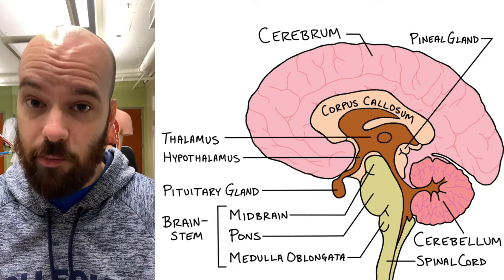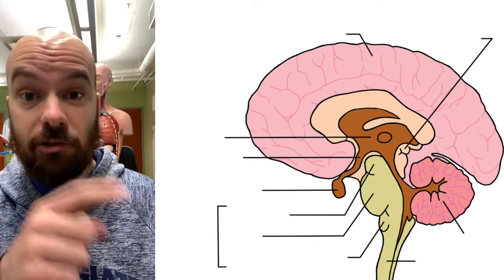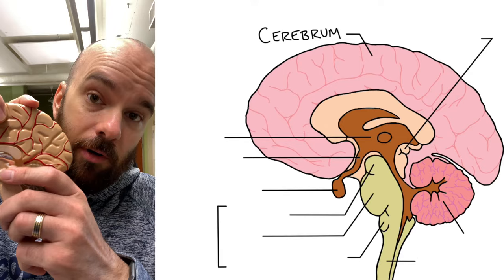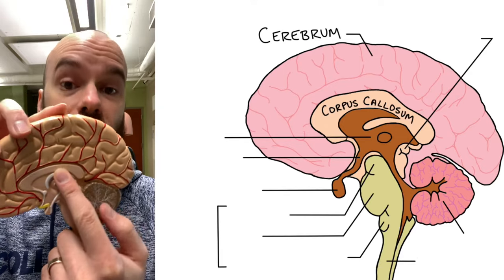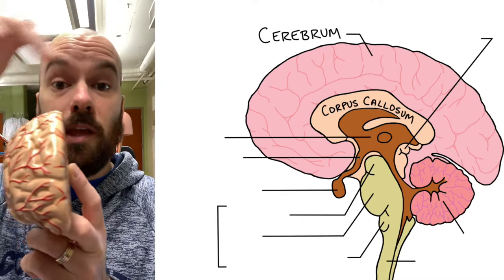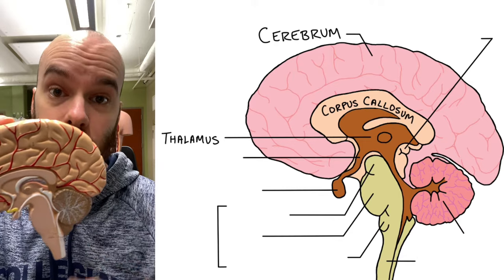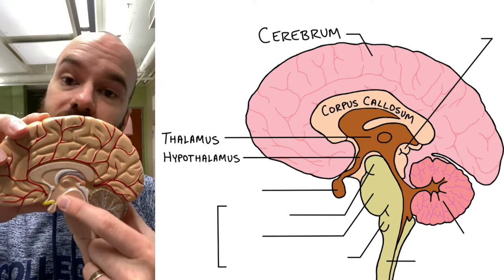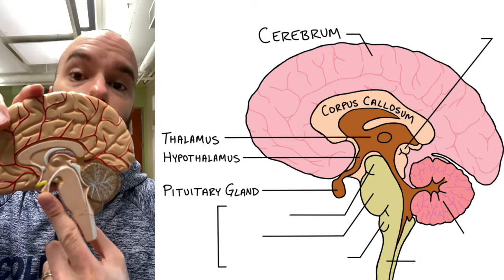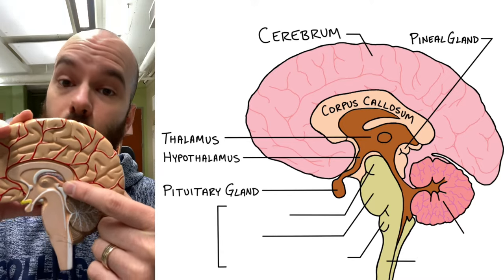Those are some of the major internal structures of the brain. Now let's do a quick recap — pause the video and see if you can identify all of these structures and their functions. We have the cerebrum, which controls thinking and information processing. We have the corpus callosum, which connects the two hemispheres of the cerebrum and helps them communicate. We have the thalamus, which is a relay station between the spinal cord and the cerebrum. We have the hypothalamus, the homeostatic control center of the body, which controls the pituitary gland — the gland that controls all of the other endocrine glands. And we have the pineal gland, which releases melatonin to help regulate your sleep cycle.